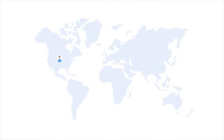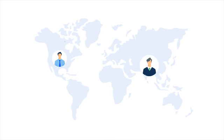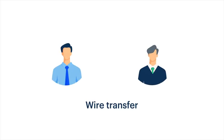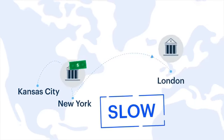Here's how. Imagine a business in the United States needs to pay a supplier in China. They've got U.S. dollars in their bank account in Kansas City, but they need the payment to show up as Chinese yuan in the supplier's account in Guangzhou. What can they do? They could send money the traditional way via international wire transfer. But that's slow — international wires take several days to clear.